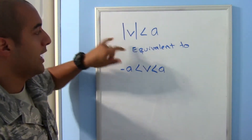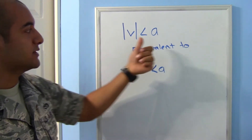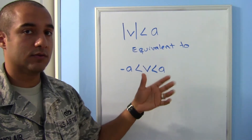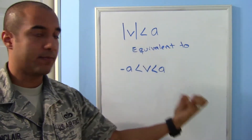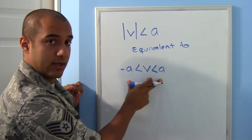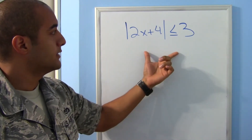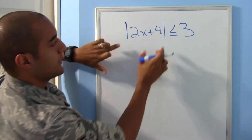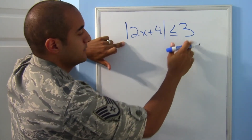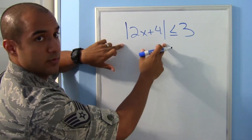Now let's look at inequalities. When your absolute value is alone and has a less-than sign, the split works differently. For absolute value of v less than a, you write it as a compound inequality: negative a is less than v, which is less than a. Let's give it a try — our absolute value is alone with a less-than-or-equal-to sign, so we can do the split.